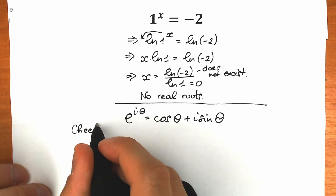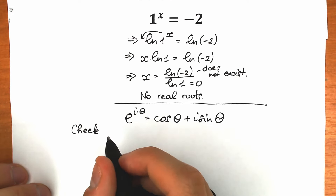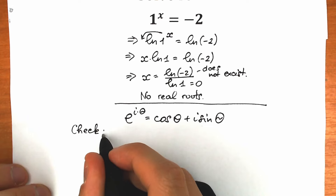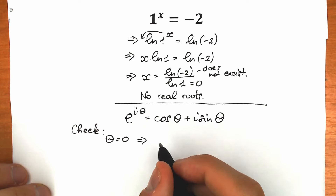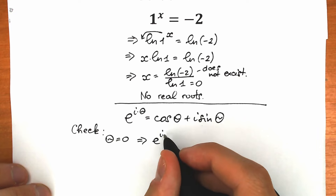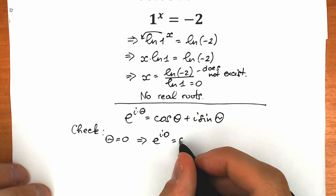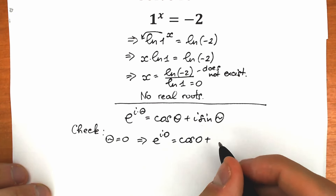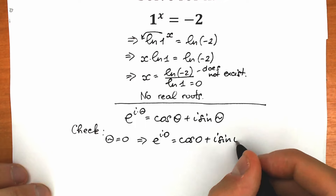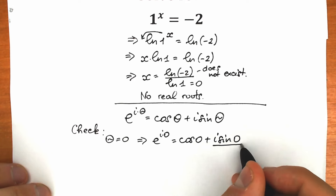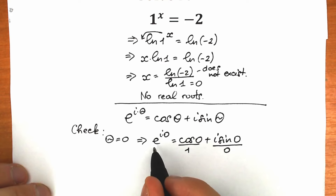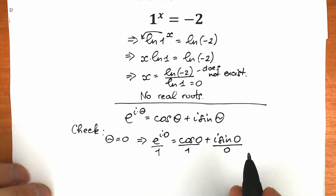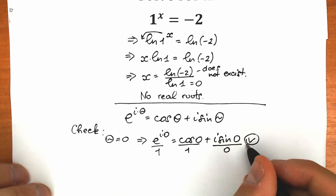For those who don't understand this identity, let's verify it quickly. When theta equals zero: e to the power i times 0 equals cosine 0 plus i times sine 0. Sine 0 equals 0, cosine 0 equals 1, and e to the power 0 equals 1. So 1 equals 1 — this checks out perfectly.